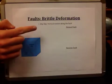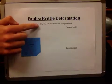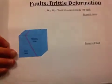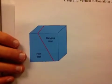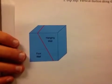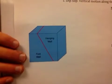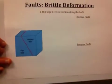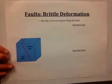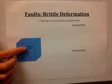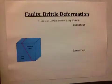The first thing we're going to look at is dip slip. Looking at our block, we have the hanging wall and the foot wall. The hanging wall is the portion of the block above the fault, whereas the foot wall is the portion below the fault. In dip slip, we see vertical motion along the fault.